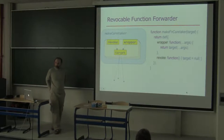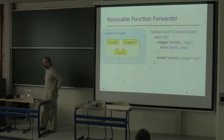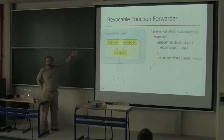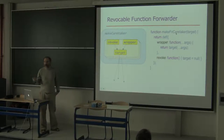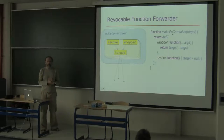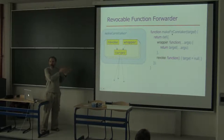Here we see our first access abstraction — the caretaker. Structurally identical to the counter. This is a pattern of revocability. The function caretaker creates a revocable wrapper of a function; the full caretaker creates revocability for both functions and records. Every time make-function-caretaker is called with a target function, it creates and returns a record of two methods — wrapper and revoke — both sharing access to the target variable.